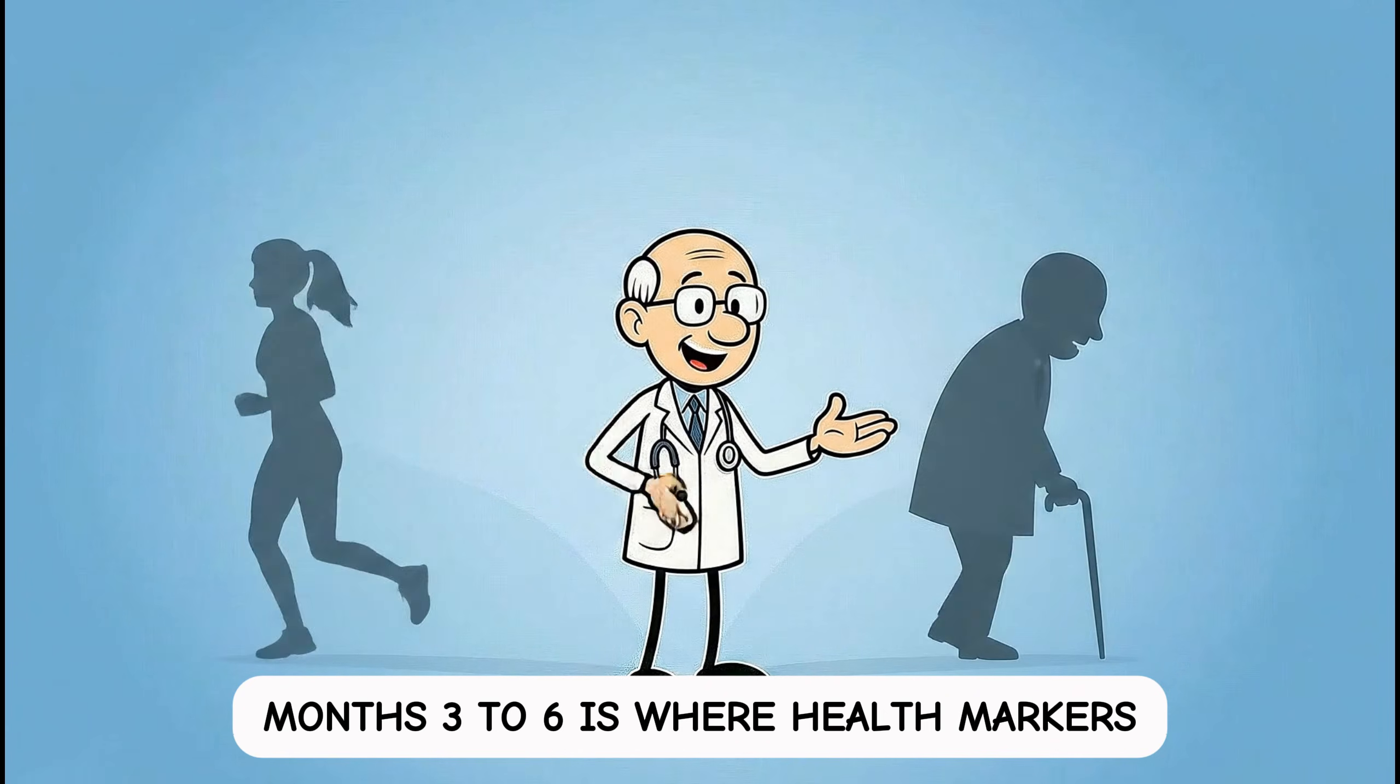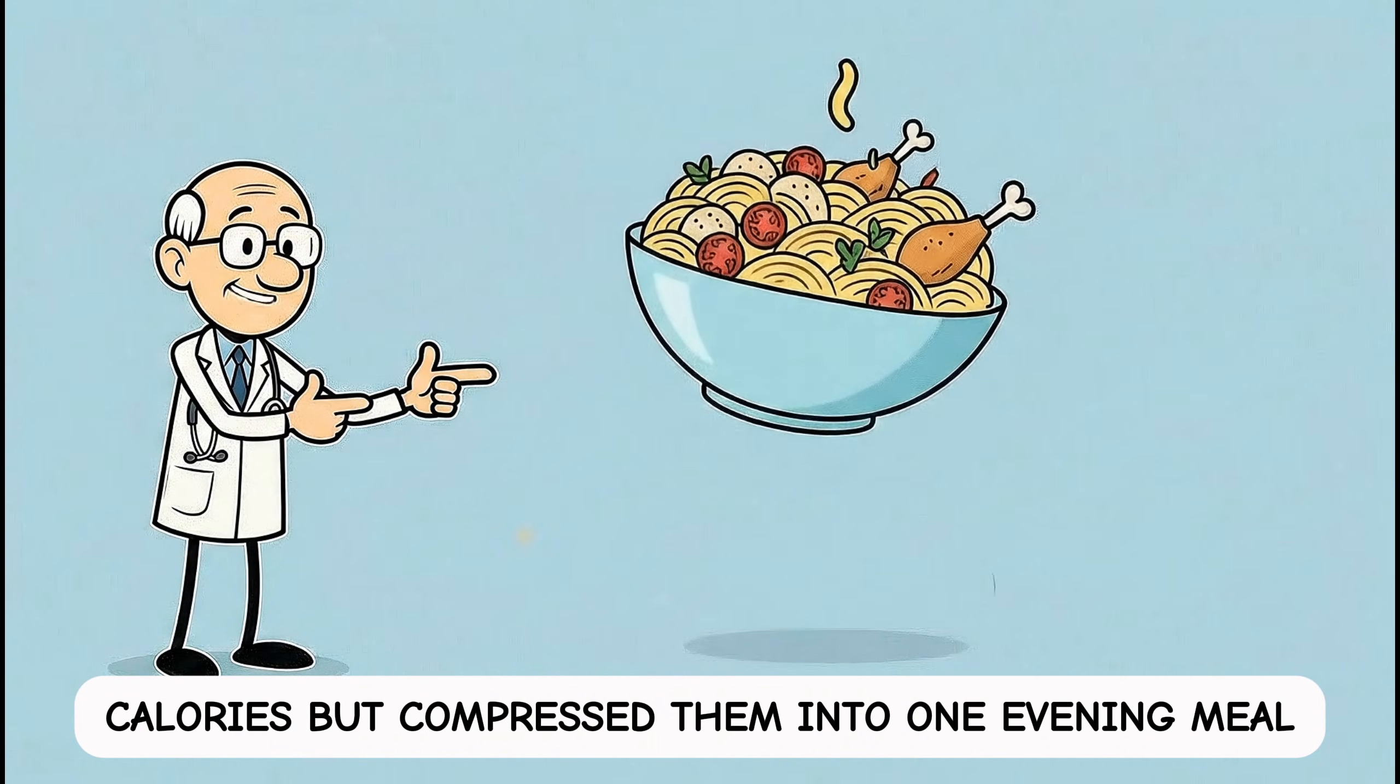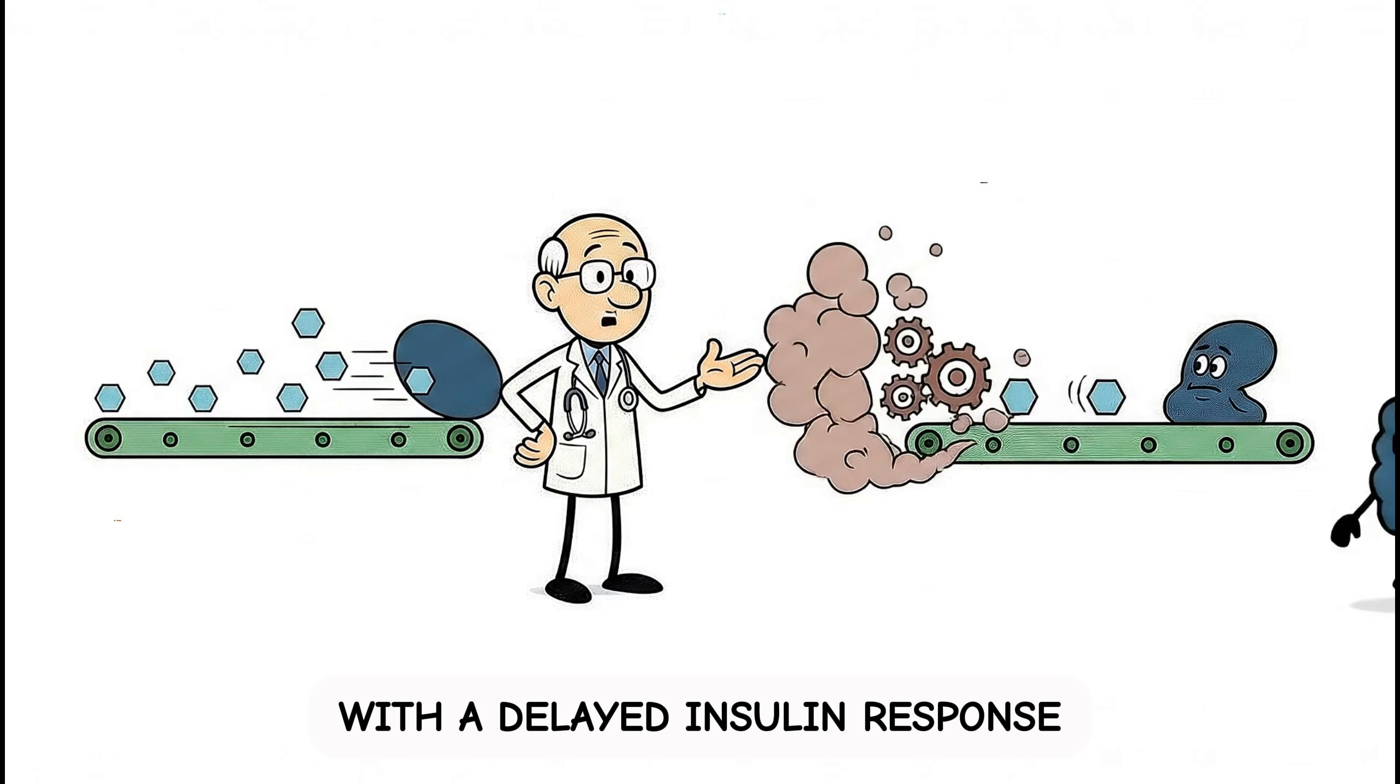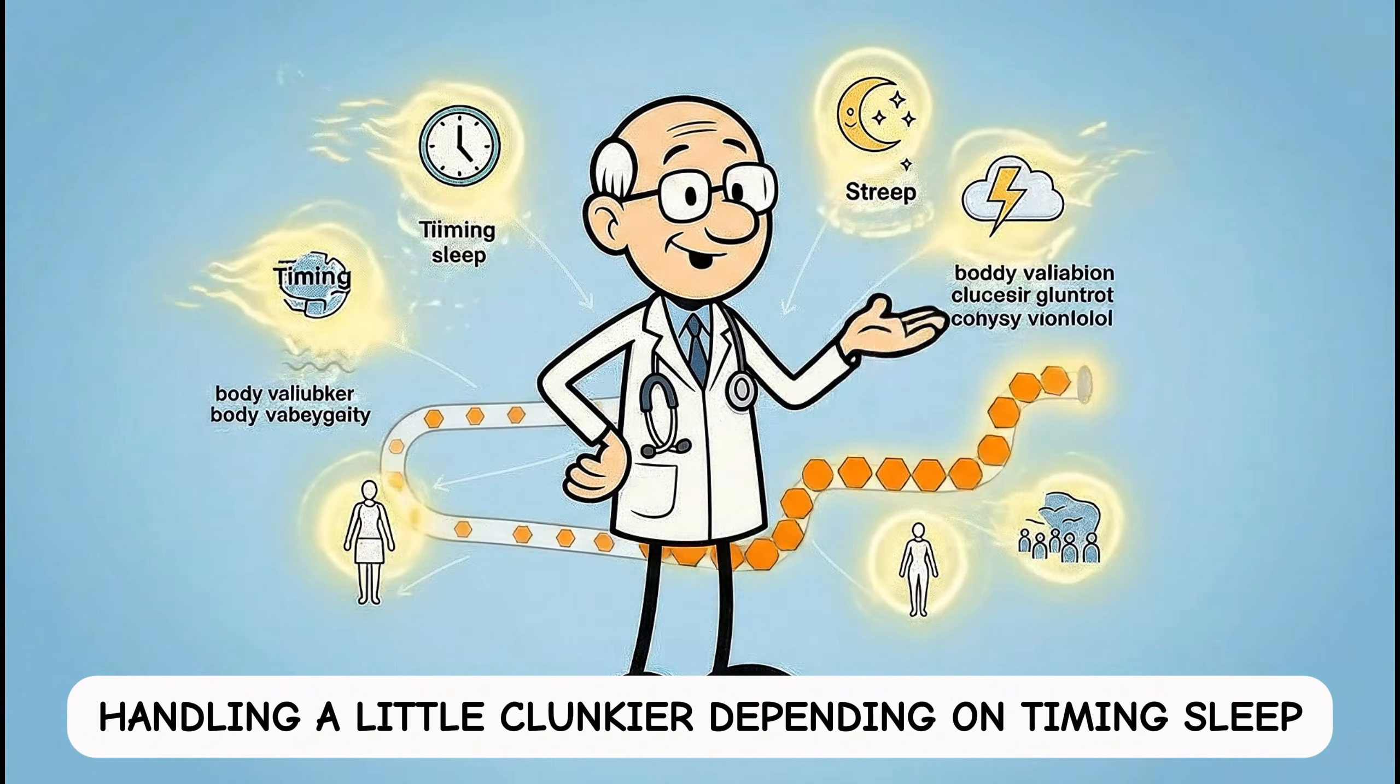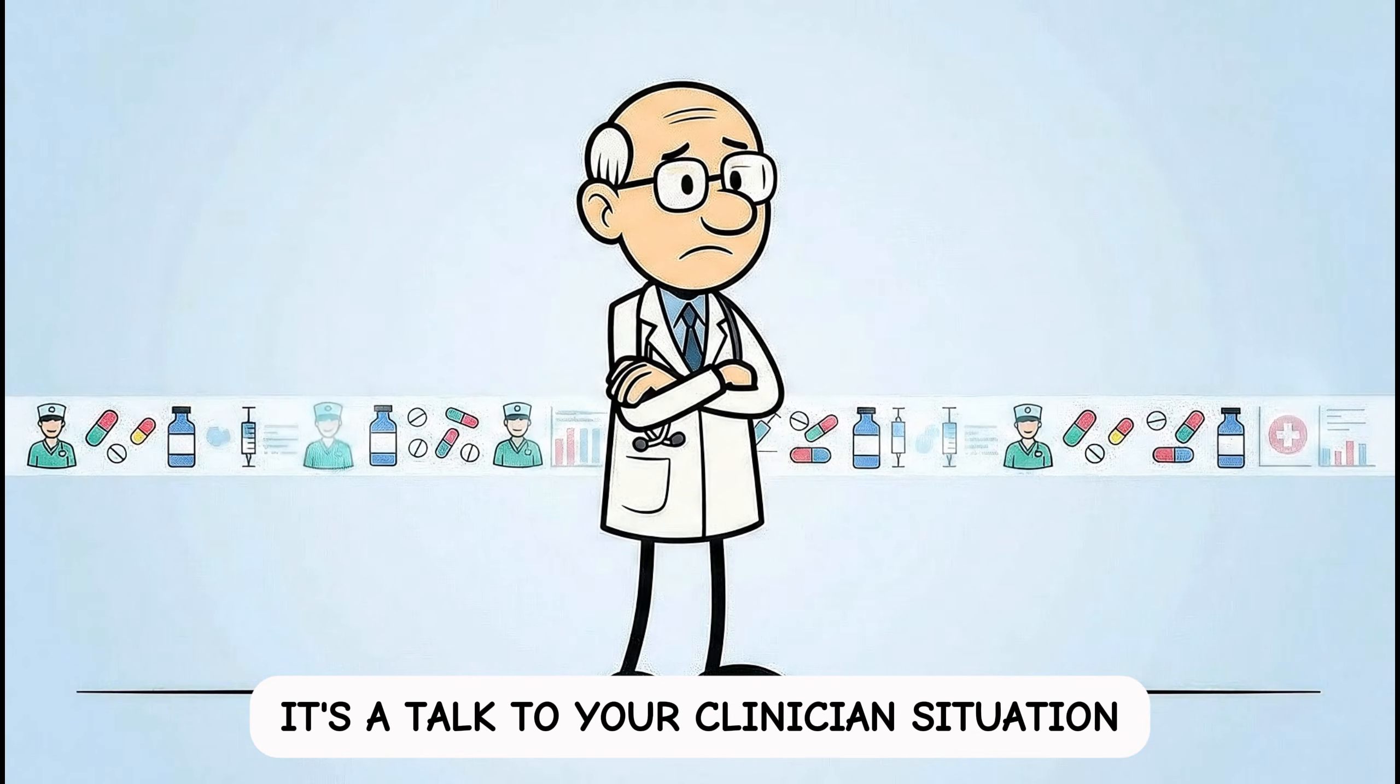Months 3 to 6 is where health markers can split, and this is why OMAD worked for me and OMAD wrecked me can both be true. In a controlled one-meal-per-day trial where people ate maintenance calories but compressed them into one evening meal, researchers reported higher morning fasting glucose and poorer morning glucose tolerance, with a delayed insulin response, compared with eating three meals. Translation, you can lose weight and still make glucose handling a little clunkier, depending on timing, sleep, stress, and your personal physiology. If you're on diabetes meds, this is not a DIY adventure. It's a talk-to-your-clinician situation.